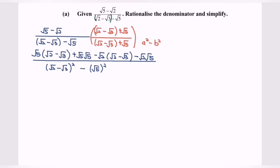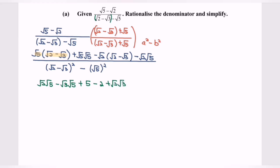Expanding the denominator: we have square root of 2 multiplied with square root of 5, followed by negative square root of 3 multiplied with square root of 5, plus 5, minus 2, plus square root of 2 multiplied with square root of 3, minus square root of 2.